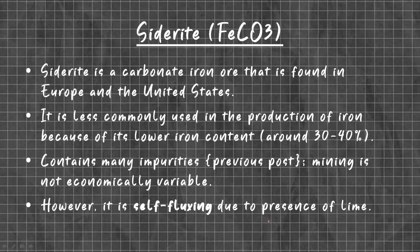Siderite. The chemical formula is FeCO3. Siderite is a carbonate iron ore that is found in Europe and the United States. It is less commonly used in the production of iron because of its lower iron content, which is around 30–40%, and it contains many impurities. Mining is not economically viable. However, it is self-fluxing due to the presence of lime, so there is no need for flux.